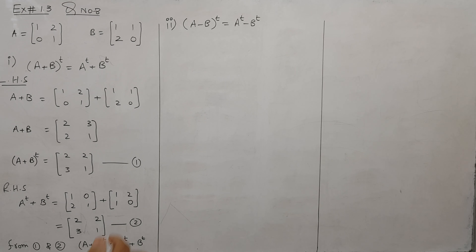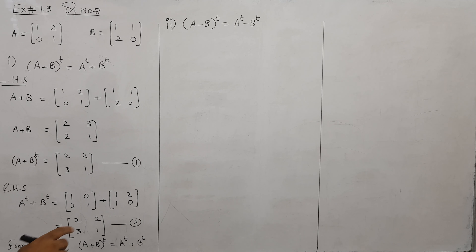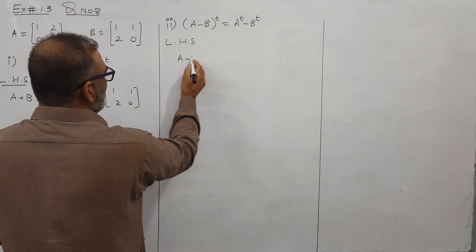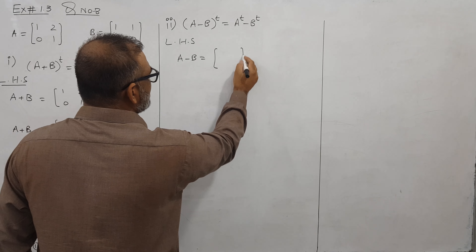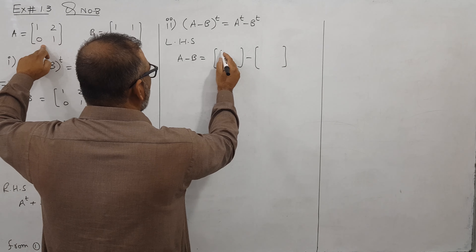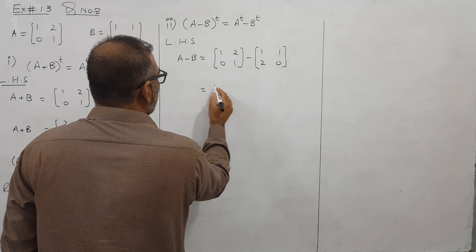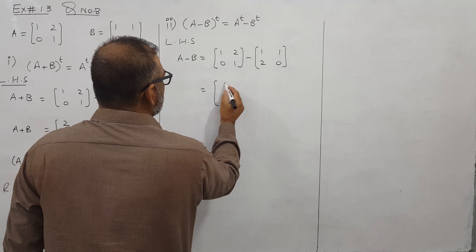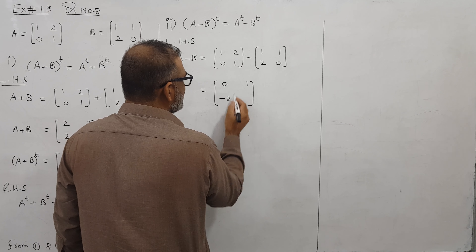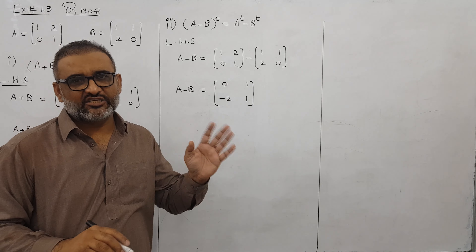اسی طرح یہ part number 2 ہے۔ اگر آپ دیکھیں تو بس plus کی جگہ minus ہے، تو چلیں یہ آسان ہے۔ Left hand side: پہلے ہم A minus B کریں گے۔ A matrix minus B matrix: 1 minus 1 we get 0, 2 minus 1 we get 1, 0 minus 2 we get minus 2, 1 minus 0 we get 1۔ تو یہ A minus B آگیا، اب ہم اس کا transpose لیتے ہیں۔